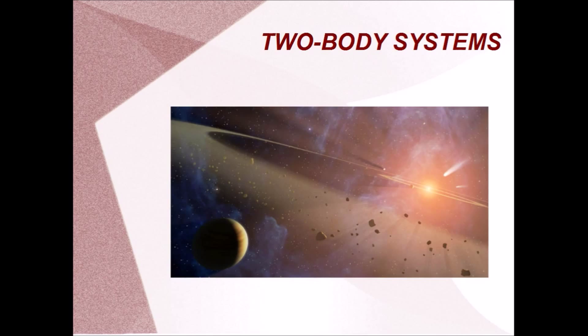Now let's look at systems with two objects, or bodies. It turns out that for any two bodies, you can find a common center of mass that sits on a line between them.